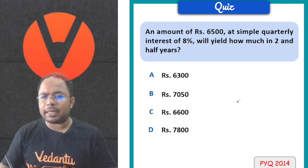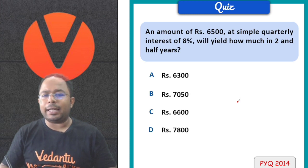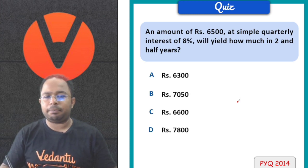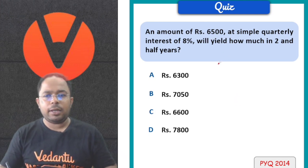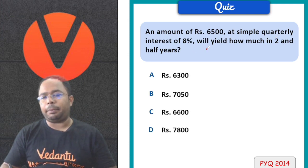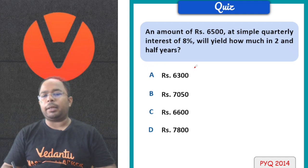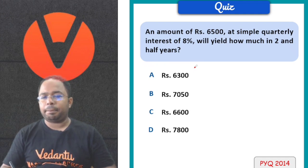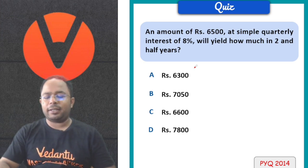An amount of Rs. 6,500 at simple quarterly interest of 8% — how much will it yield in 2 and half years? The amount of 6,500 is invested at 8% quarterly. After 2 and half years, how much will we get? Looks like a nice question.